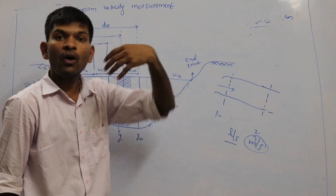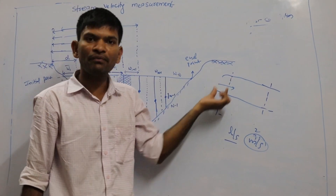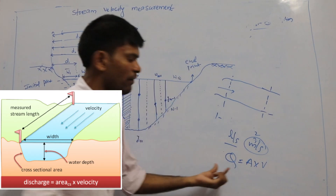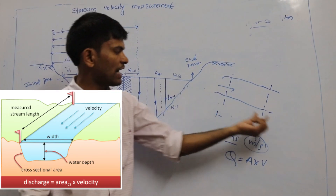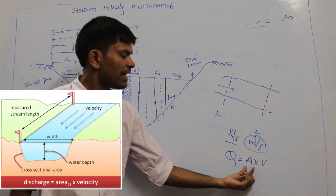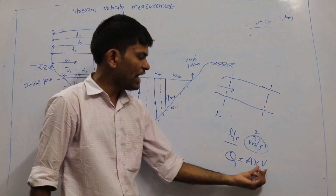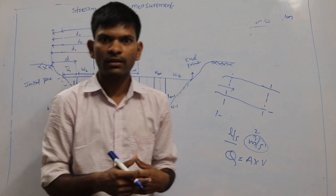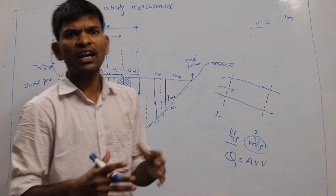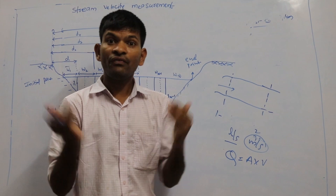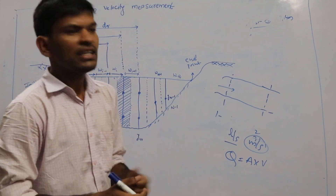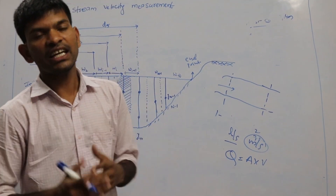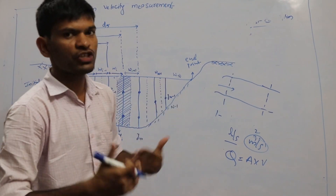To measure the volume of water flowing in a stream, we use Q equals area into velocity. For this I need area and velocity. For area measurement, if the body is rectangular, square, or circular it is straightforward. But in practical open channel conditions, the cross-section is neither rectangular nor square nor circular — the fields are in irregular shape.